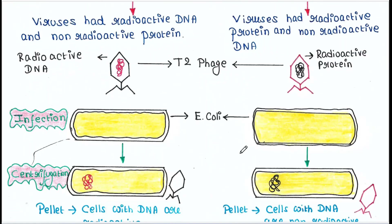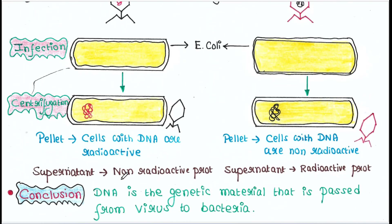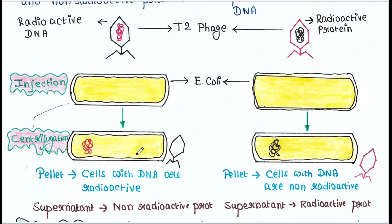Next, these viruses were allowed to infect E. coli bacteria. The virus particles were separated from the bacteria by spinning them in a centrifuge. In the first set, the pellet contained bacterial cells with radioactive DNA, and the supernatant contained non-radioactive proteins. This indicated that DNA was the material that passed from the virus into the bacteria.